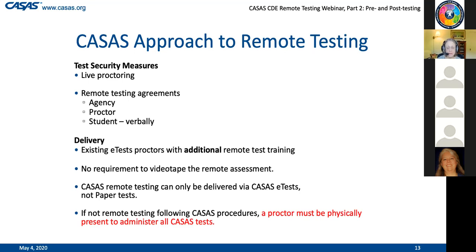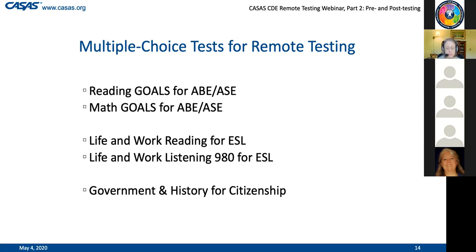In any situation where you're giving the test face-to-face essentially, the basic normal rules still apply - a proctor must be physically present. Now, which tests can you use for remote testing with multiple choice tests? It's the same ones you've been using: the GOALS series - Reading GOALS and Math GOALS for ABE and adult secondary. For ESL, it's Life and Work Reading and Life and Work Listening 980. Also, the Government and History for Citizenship test can be used with remote testing following the same guidelines.